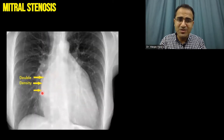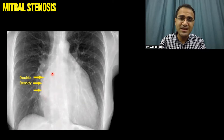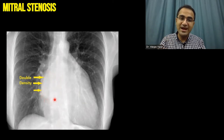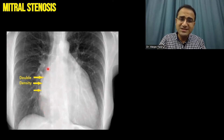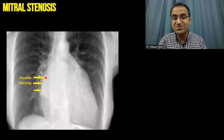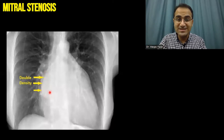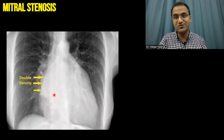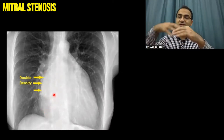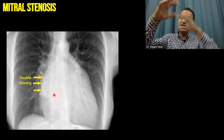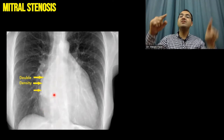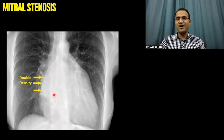This picture shows the double density sign. If you look carefully, there is one density present at the front and another density at the back. This density is basically the left atrial enlargement — called the double density sign — two borders of the heart, because at the back the left atrium has enlarged and is forming another border of the heart.